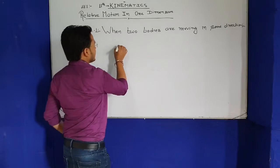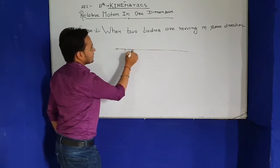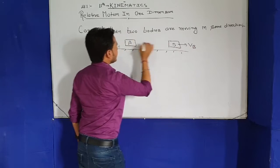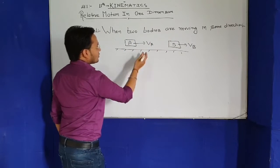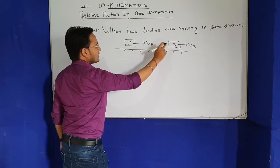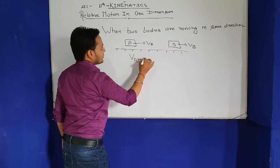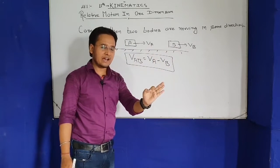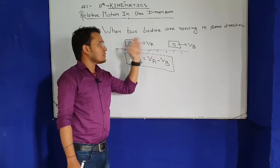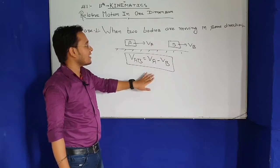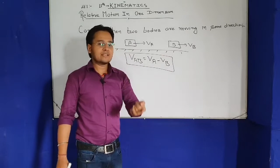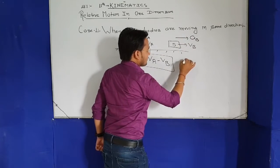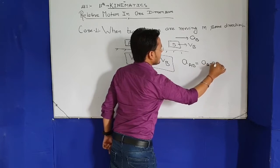First case: when two bodies are moving in the same direction. Suppose body A has velocity V_A and body B has velocity V_B, both moving in the same direction. The velocity of A with respect to B is V_A minus V_B. The same concept applies to acceleration: the relative acceleration of A with respect to B is A_A minus A_B.